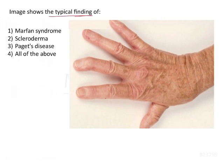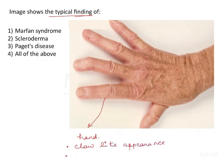The given image shows typical findings. We have an image here of the hand — let's try to analyze this image. It has a claw-like appearance. The skin appears thick and shiny, and there is deformation of the digits.